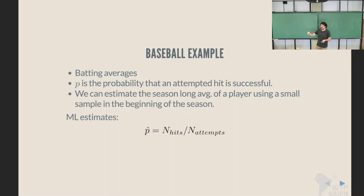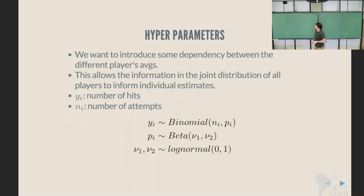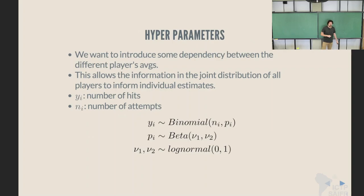One way to make use of this information is to introduce a distribution on the batting averages. Instead of assuming each player is independent, I'm going to say all these players — all of their batting averages, these probabilities of hitting the ball — they come from the same distribution. This is conceptually similar to setting a prior on the batting average, but I don't know what this distribution is. I believe the batting averages are related, but I don't know what distribution to use.